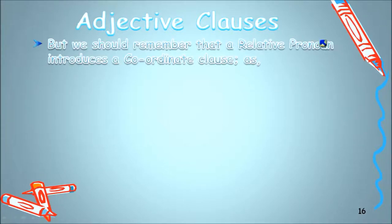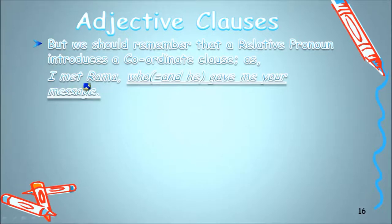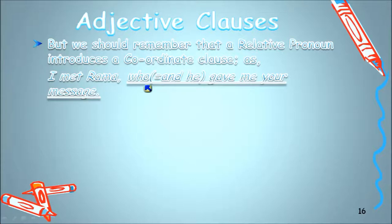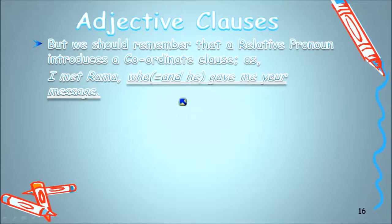We should remember that a relative pronoun can introduce a coordinate clause. For example: 'I met Rama who gave me your message.' Here, 'who' is used to mean 'and he,' making this a coordinate clause, not a subordinate clause. The result is a compound sentence.